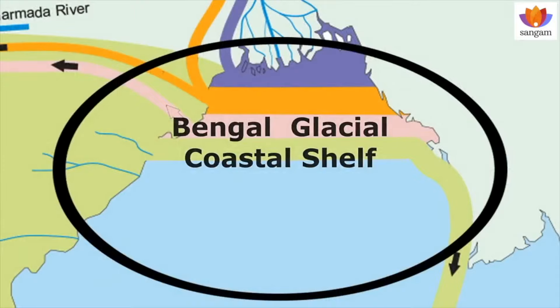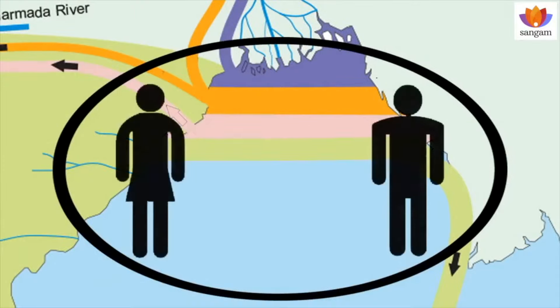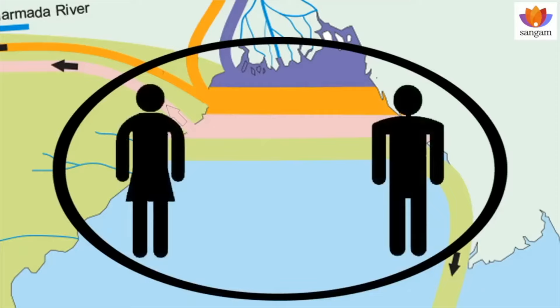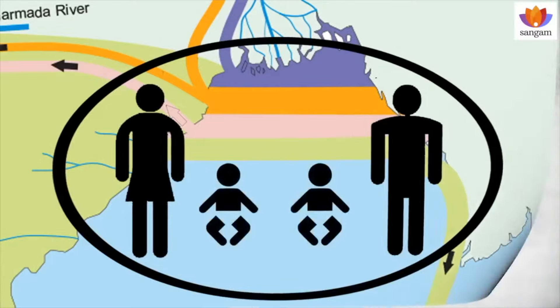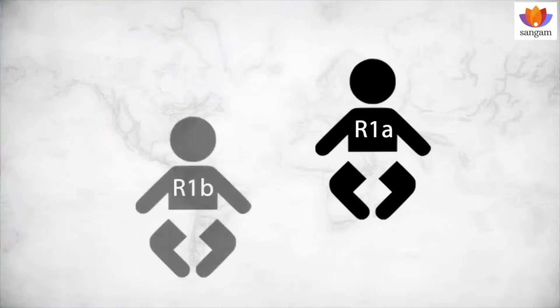During this time, the population of two distinct genetic territories — the east coast of India and Southeast Asia — intermixed. And this genetic union produced newer genetic identities like R1-alpha and R1-Bravo haplogroups in Y chromosome.